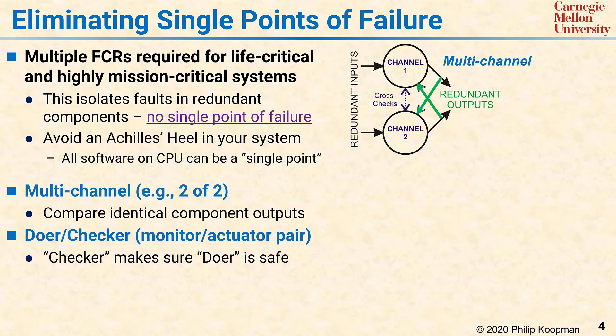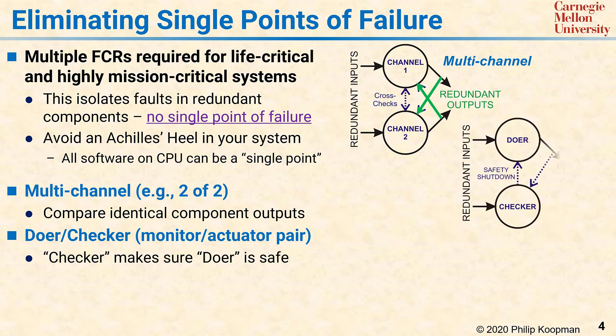A second common pattern is the doer-checker pattern, sometimes called a monitor-actuator pair. In this approach, a doer fault containment region performs the primary computation and generates an output to the controlled system. A checker fault containment region is continuously checking the output and does a system safety shutdown if the output is unsafe. You should note that the output could be momentarily unsafe while the shutdown is occurring, but in many systems this is fine because no actual damage can be done in that small amount of time.